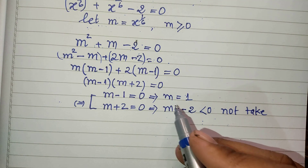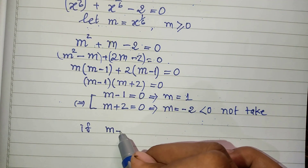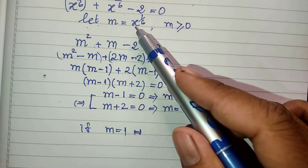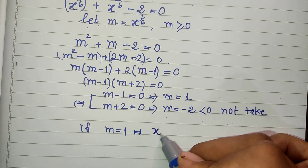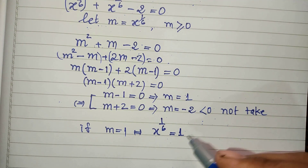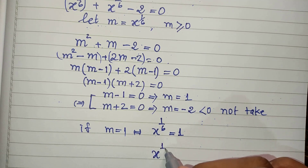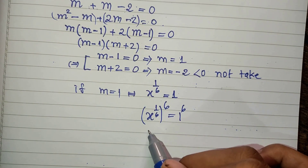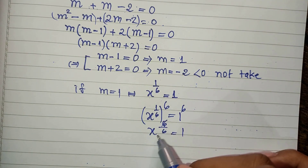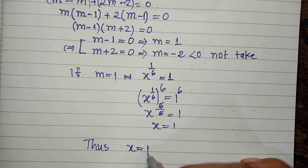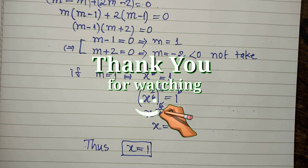With m equal to 1, we substitute back: h to the power 1/6 equals 1. Raising both sides to the power 6, we get h to the power 6/6 equals 1 to the power 6, which simplifies to h equals 1. So the answer is h equals 1. If you like my videos, please don't forget to subscribe to my channel for more exciting videos. Goodbye!